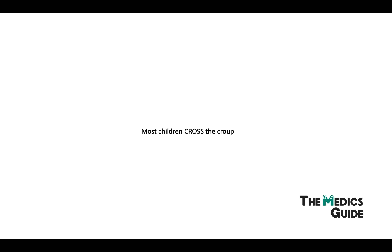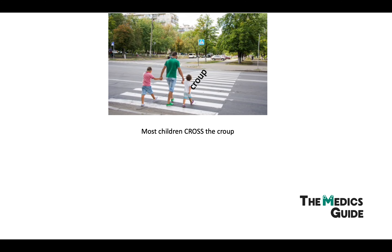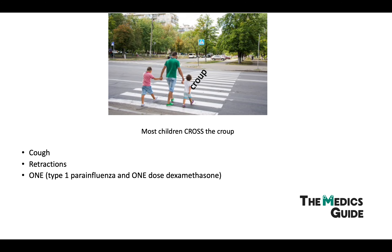To help remember everything, the key phrase is: 'most children cross the croup.' Children are the ones who get it, and most of them get over it without any issues. Breaking down 'CROSS': C for cough, R for retractions, O1 for parainfluenza type 1, O2 for one dose of dexamethasone, S for steeple sign, and S for stridor. If you remember that, you'll essentially be okay answering any exam question.